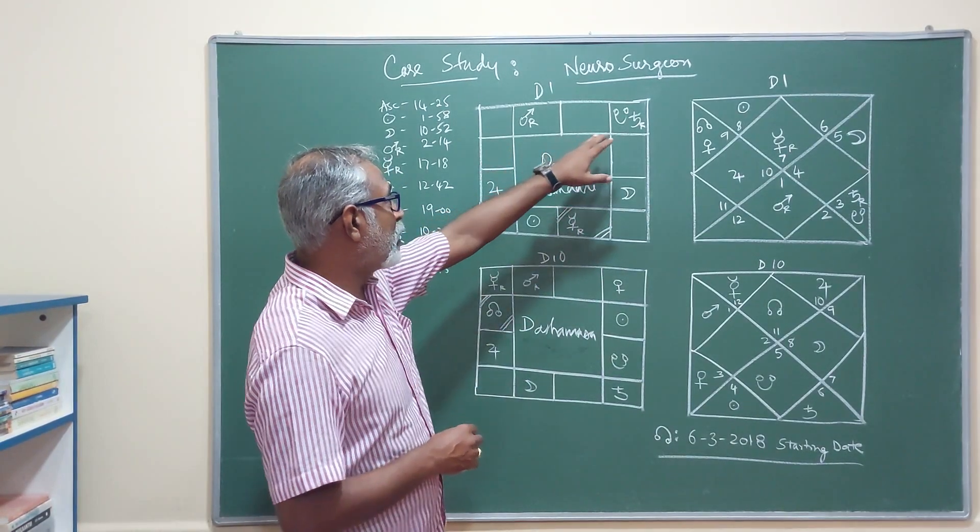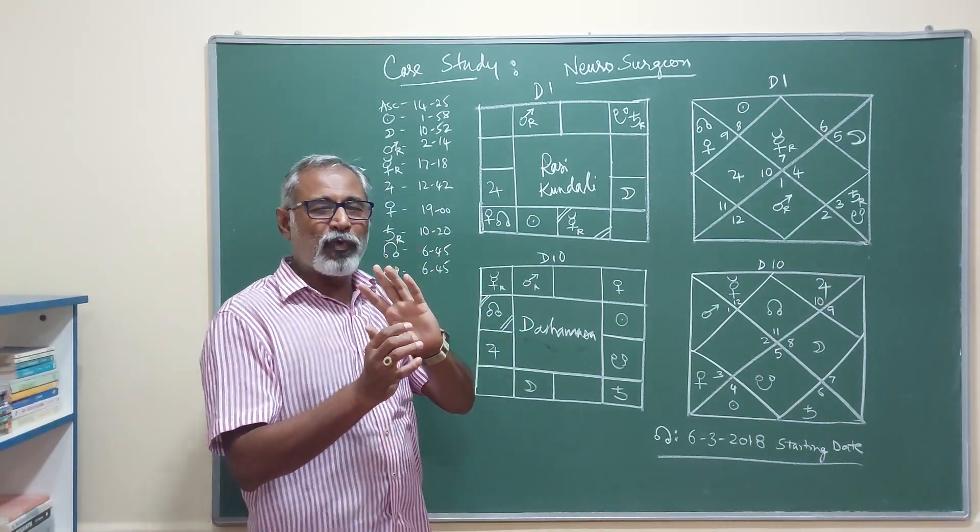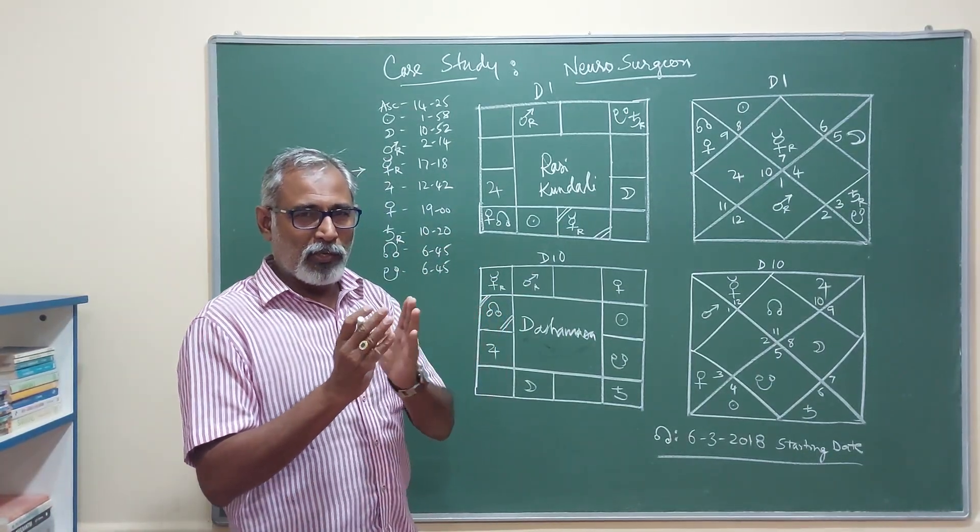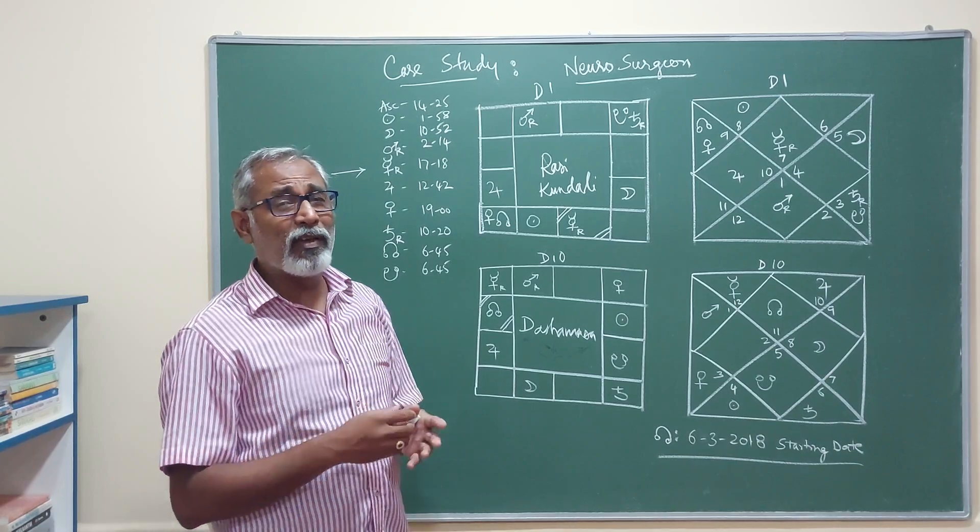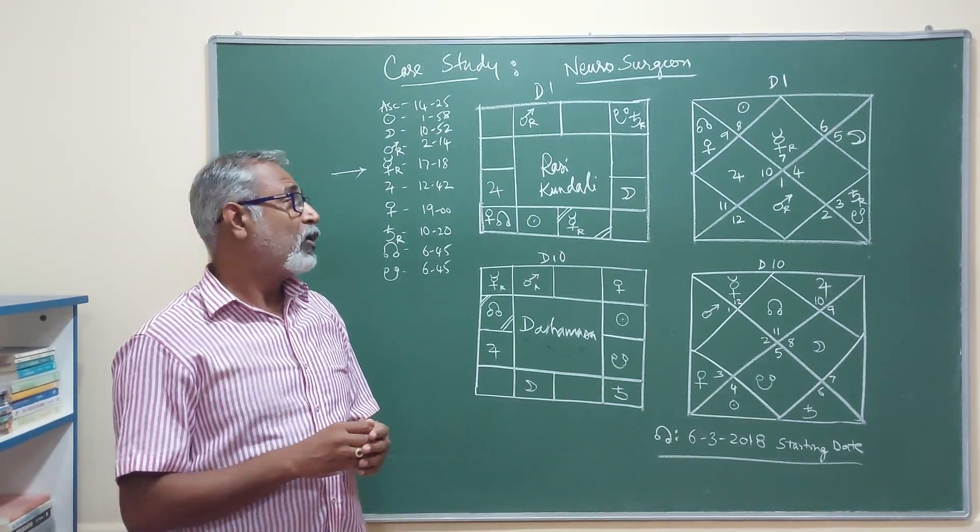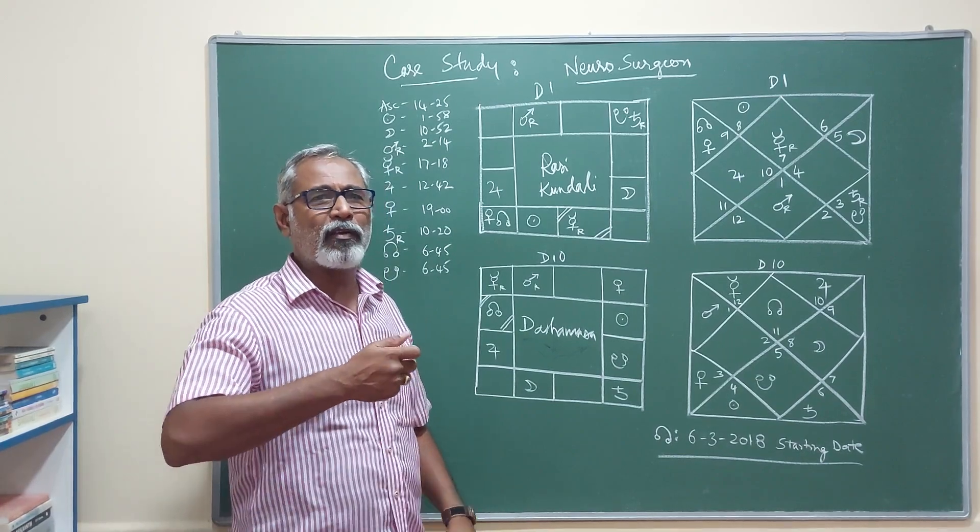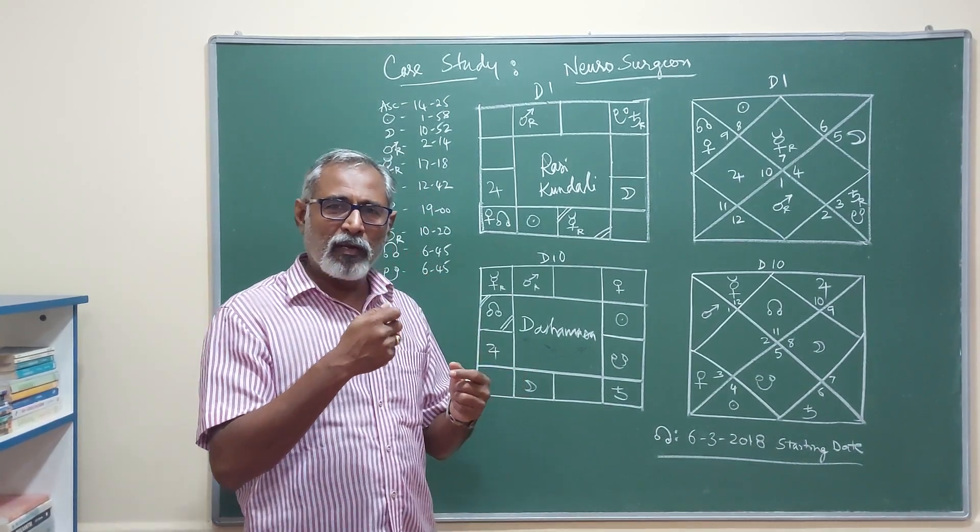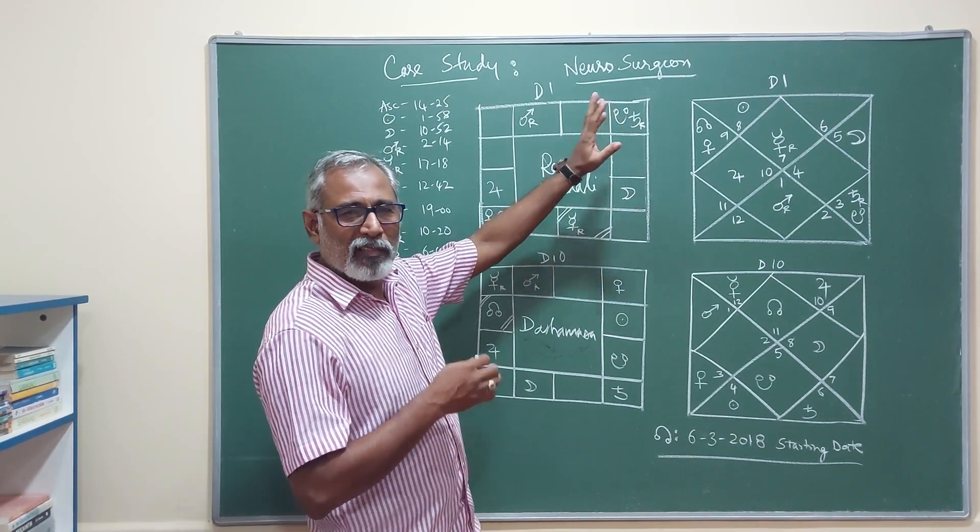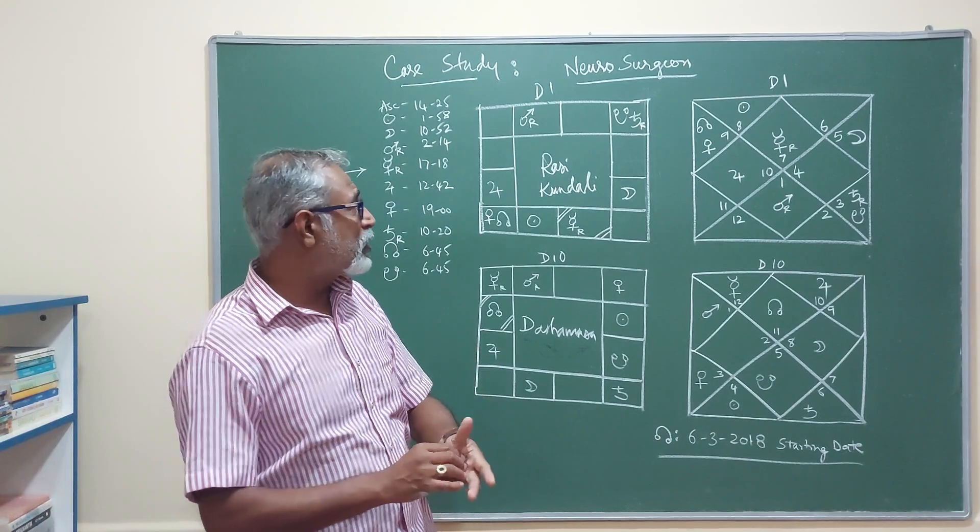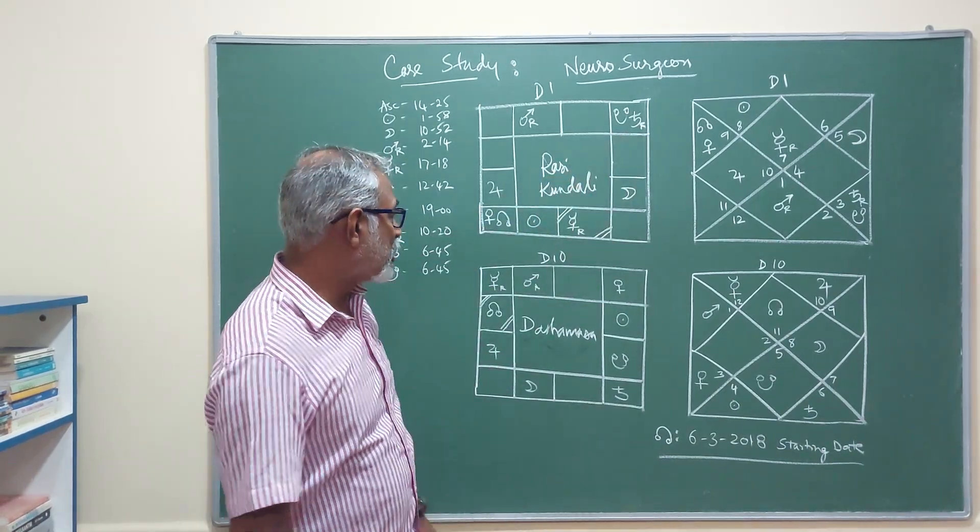It is a yogakaraka here being the ninth lord sitting in the ascendant, and such a beautiful position that the fifth lord is sitting in the ninth house along with Ketu. Ketu is the one which deals with minute surgeries - laparoscopic surgery, laser surgeries, non-invasive surgeries. This is what is represented by Ketu - cryogenic surgeries like freezing a particular thing and then cutting it off. All these things come under Ketu and Saturn, and this particular placement in the ninth house which is for higher studies.